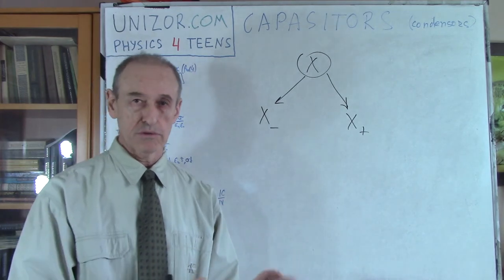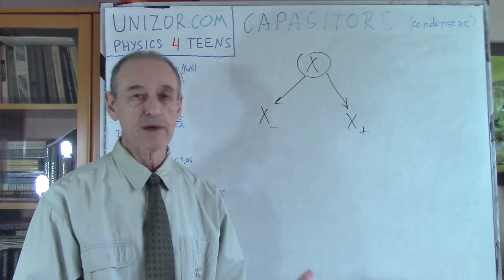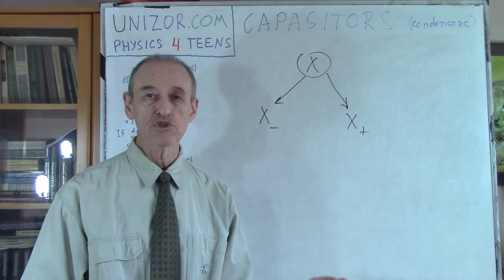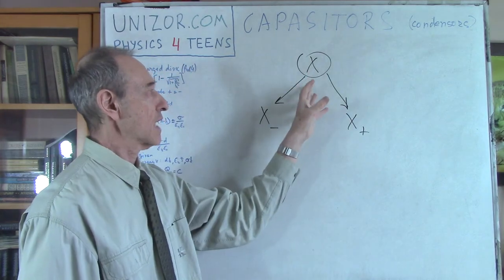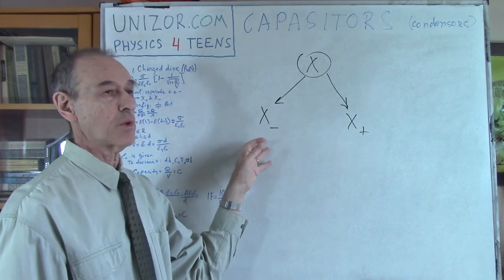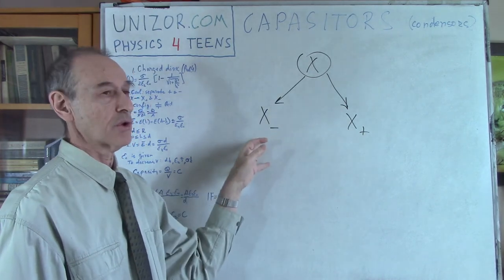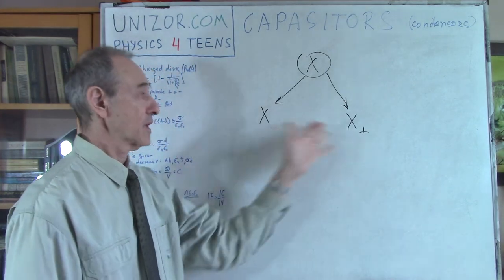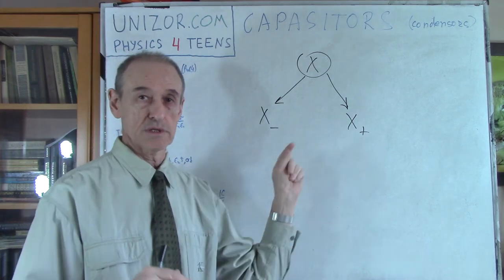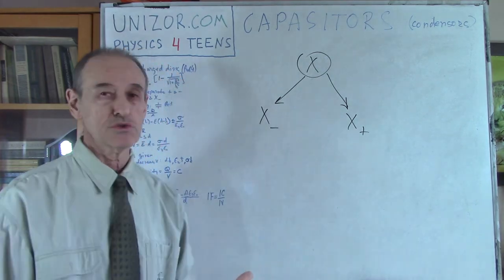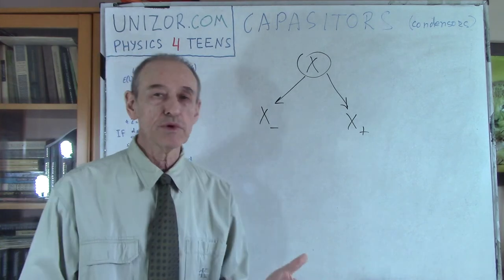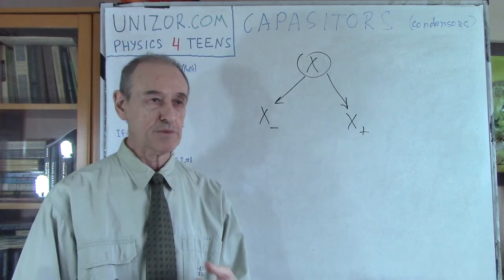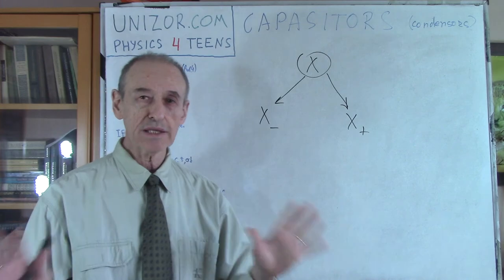How we do this is a different question — we're not talking about that right now, but there are devices which do this. For now, let's assume we manage to take one object, separate electrons into another, and whatever is left has a positive charge — equal in magnitude. Now we have to store it somehow. For practical reasons, we cannot store it very far away, because that means we have to transport electrons, which is difficult.